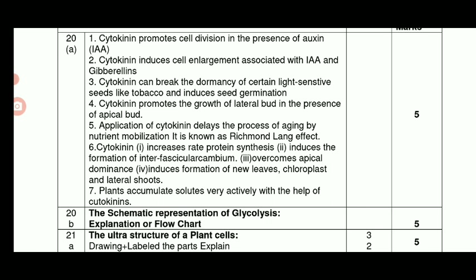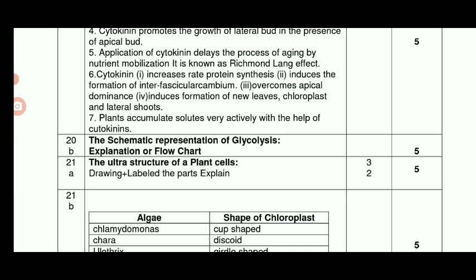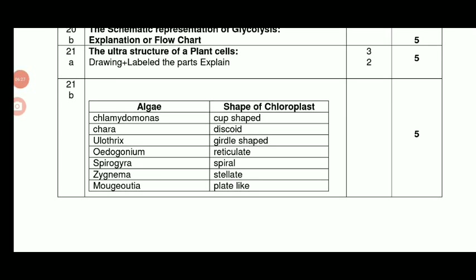The systematic representation of glycolysis — if you know this, you will get an explanation of glycolysis and marks. If you know the diagram of the plant cell, you will get the ultra-structure of plant cell. Plant cell diagram: 3 marks for the diagram, 2 marks for labelled parts — total 5 marks.